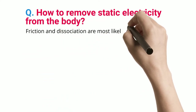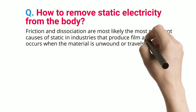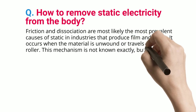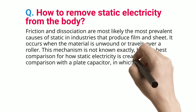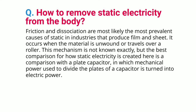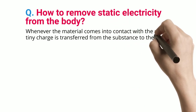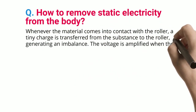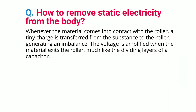Friction and dissociation are most likely the most prevalent causes of static in industries that produce film and sheet. It occurs when the material is unwound or travels over a roller. The best comparison for how static electricity is created here is a plate capacitor, in which mechanical power used to divide the plates is turned into electric power. The voltage is amplified when the material exits the roller, much like the dividing layers of a capacitor.